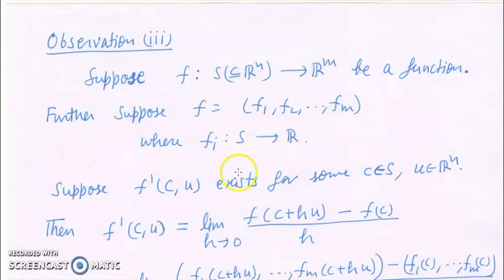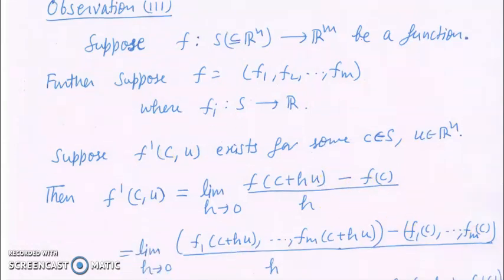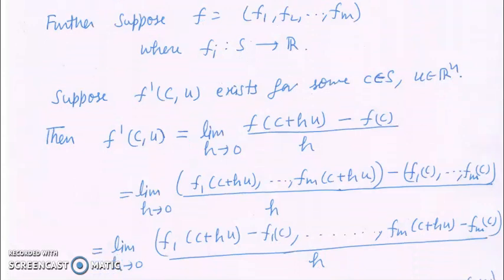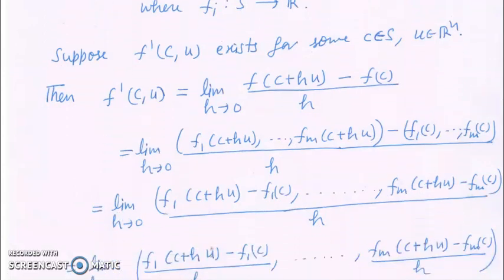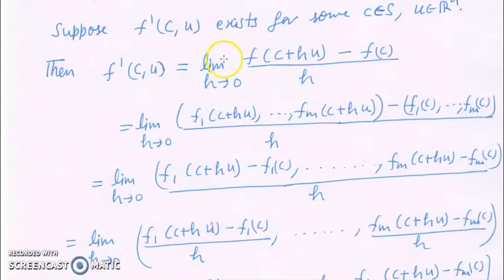Now suppose u is any direction in Rn and f'(c; u), that is the directional derivative of f at c in the direction u, exists. By the definition of directional derivative, we can write f'(c; u) equal to the limit as h goes to 0 of [f(c + hu) - f(c)] / h.